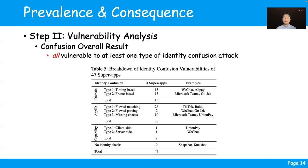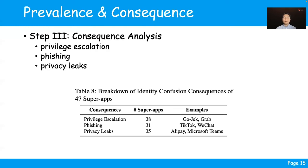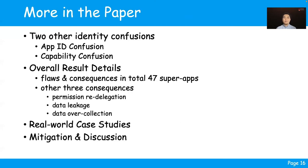As a result, we find that all 47 super apps are vulnerable to at least one type of identity confusion attack. Some are even worse — for example, WeChat suffers from all kinds of identity confusion, and Microsoft Teams suffers from domain name confusion and app ID confusion. Once exploited by a malicious attacker, it can cause phishing, privacy leaks, and privilege escalation. We find 38 super apps are vulnerable to privilege escalation, 31 are vulnerable to phishing, and 35 to privacy leaks. Due to the time limit, two other identity confusions and additional interesting results cannot be covered here — please refer to our paper for details.